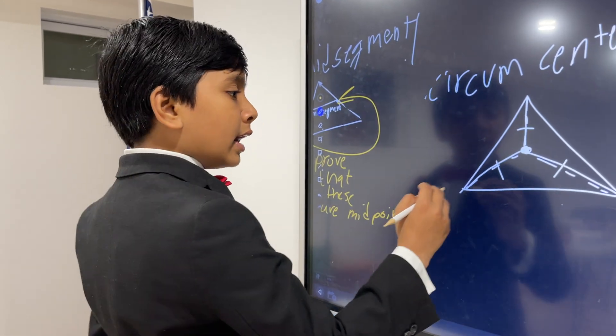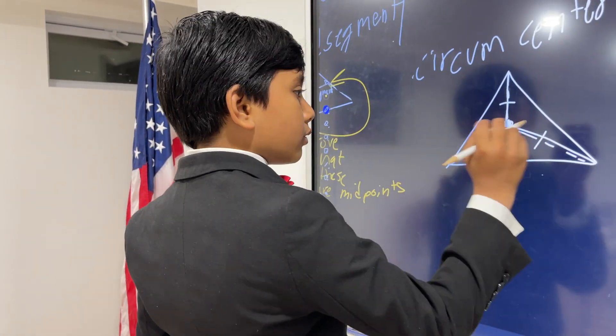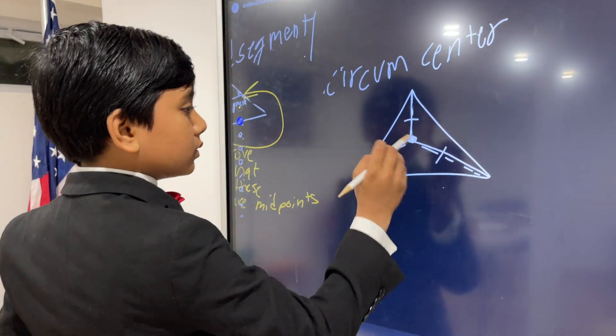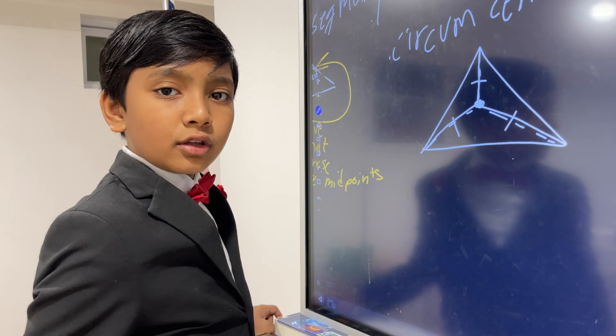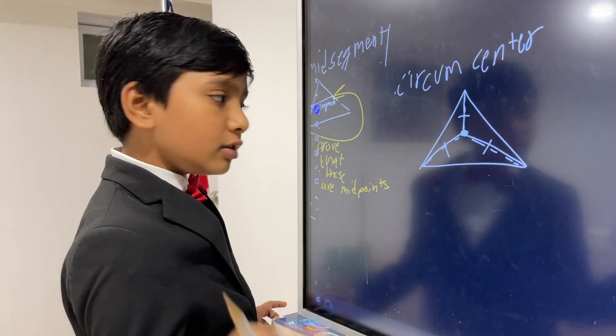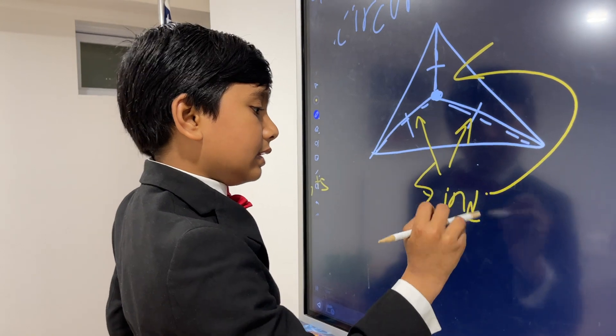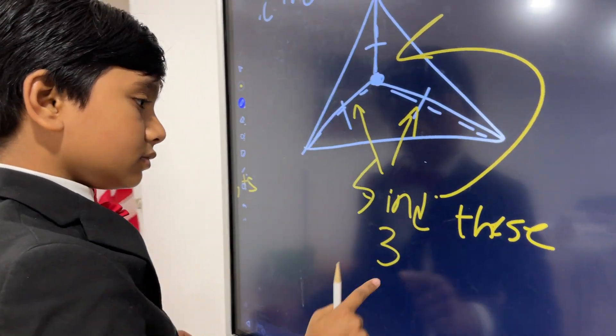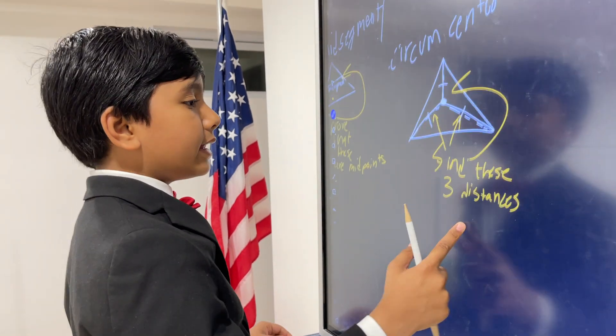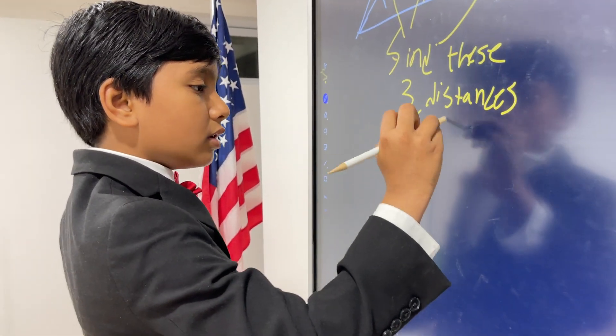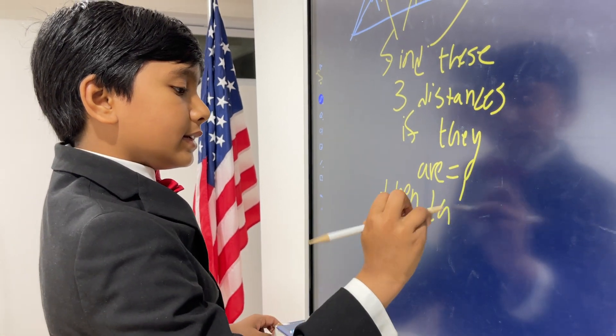The circumcenter is the point in a triangle where all of the vertices are equidistant to that point. So for example, in an equilateral triangle, the circumcenter is the center. And all of these lines, which are from the vertices to our circumcenter, are congruent. So we can do this by finding these three distances. Now these three distances, if they are equal, then this is a circumcenter.